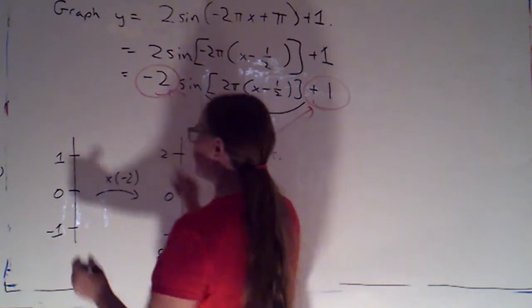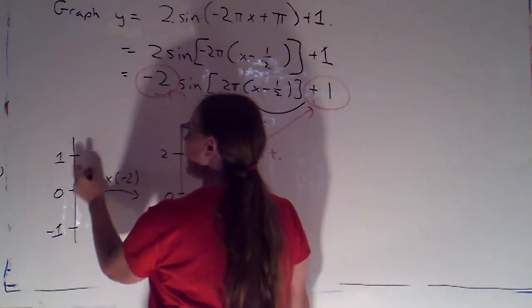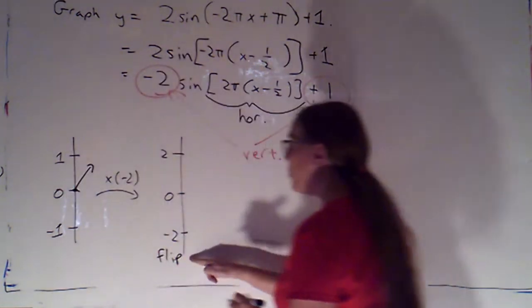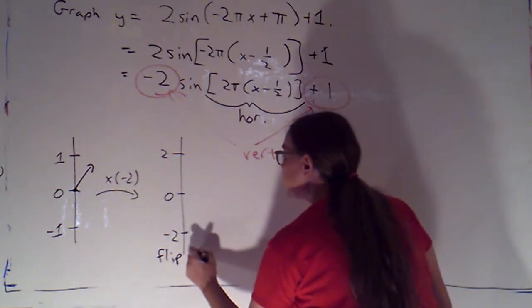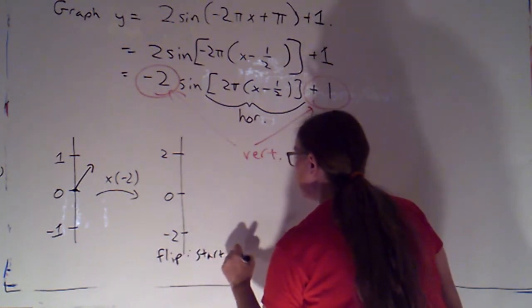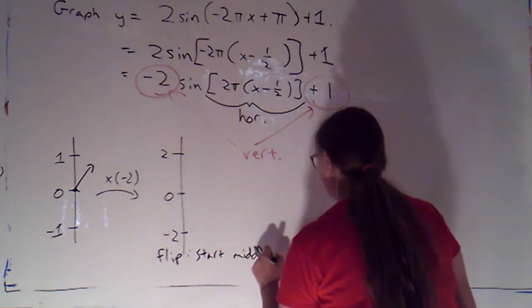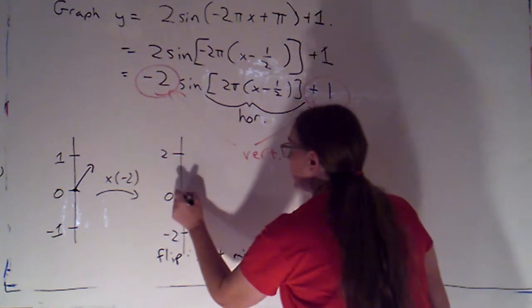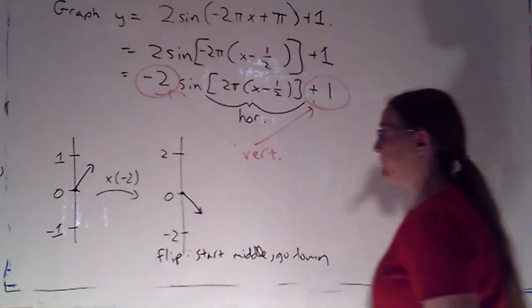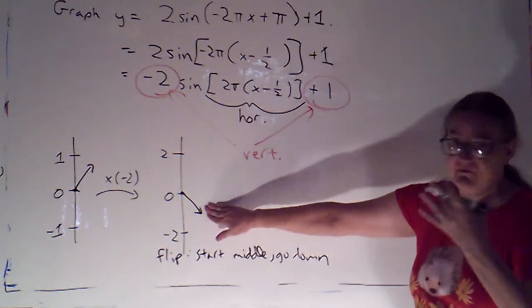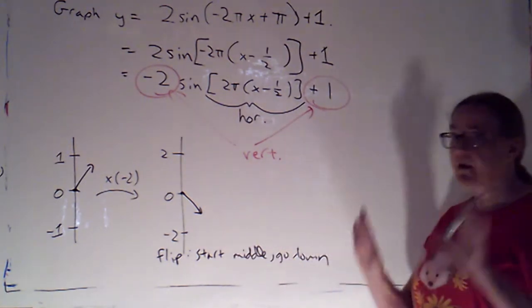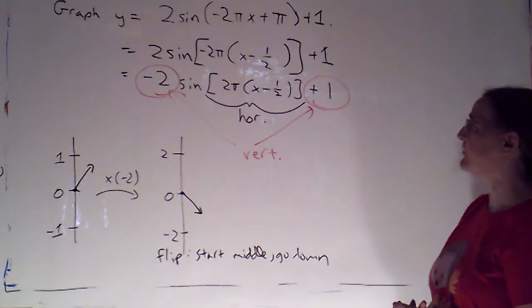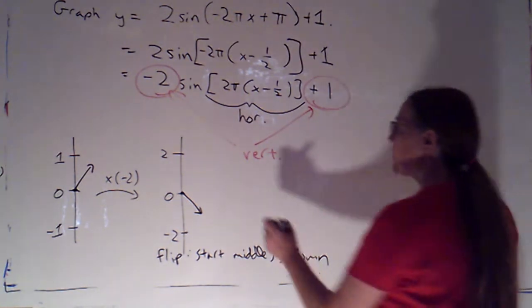So with the normal graph for a sine, I would start at the middle value and go up. When I flipped it, that means I'm going to start at the middle, but I'm going to go down. So that I don't forget, I indicate that visually and I write it down. Whatever trick is going to work for you so that you don't forget that.